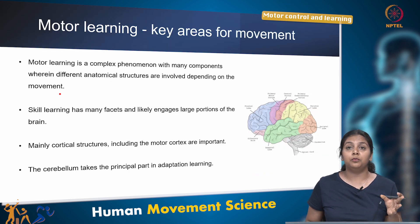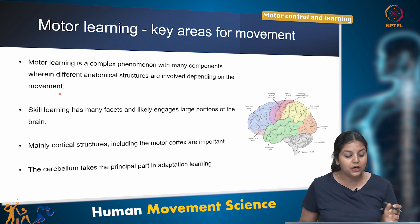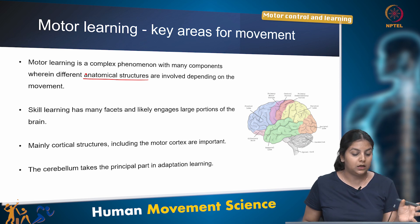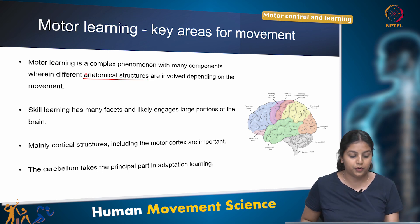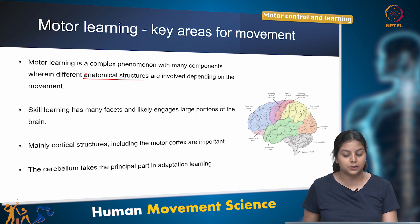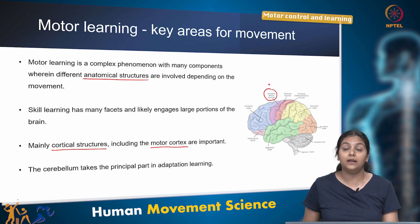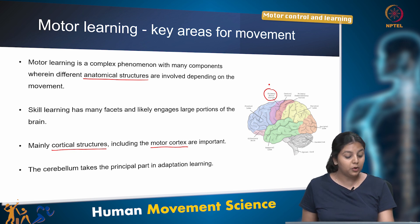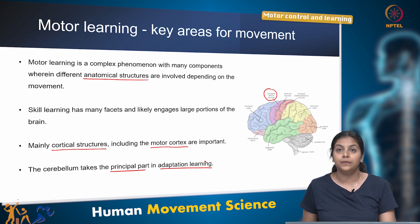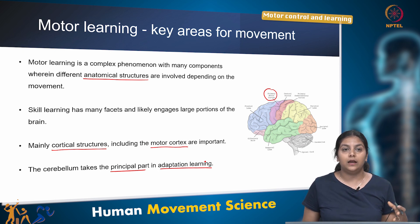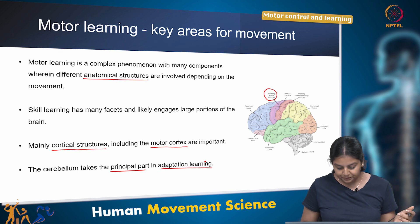Motor learning is a complex phenomenon involving many anatomical structures depending on the particular movement. Skill learning engages large portions of the brain — mainly the cortical structures including the motor cortex are quite important in skill learning. The cerebellum takes a main role in adaptation learning, once the primary skills have been learned.